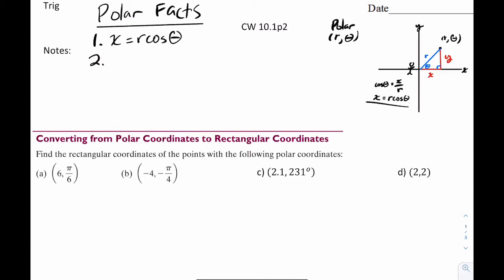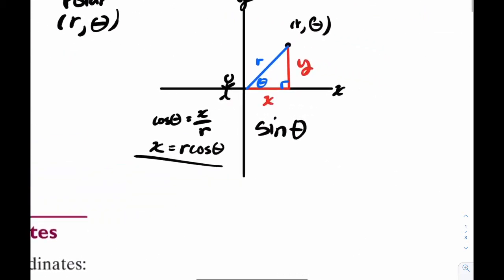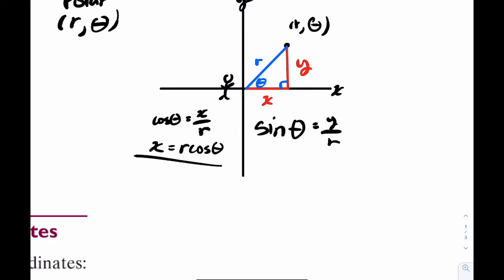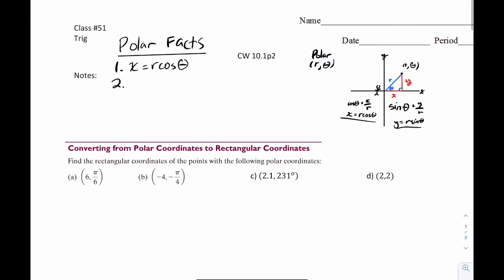You might think, can't we do that with sine? And we sure can. Sine theta equals y over r — it's opposite over hypotenuse. So by the same logic, y equals r sine theta. That's polar fact number two.